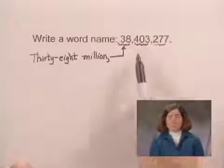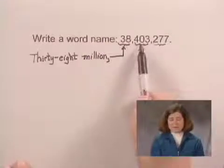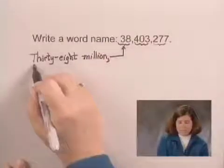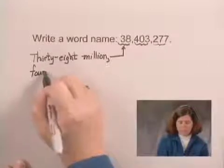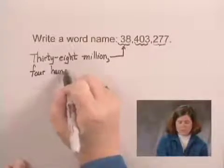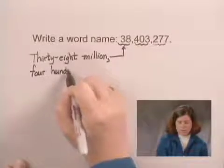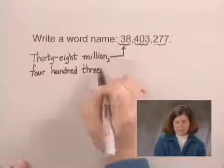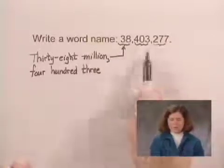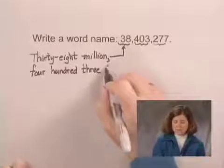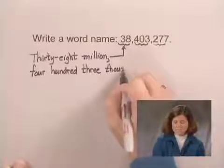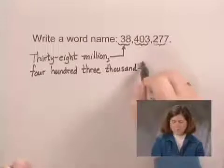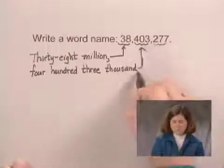Then we look at the next period. The number inside that period is 403, so we write 403, and that period is thousands, so we write thousands, with a comma.